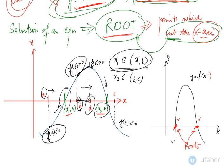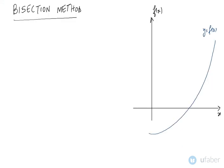Now that we know how to approximate the existence of a root in a given interval, we look at analytical techniques to solve these algebraic and transcendental equations. We will mainly look at three methods, the first of which is the bisection method. We will go through them one by one.